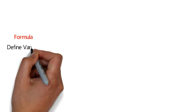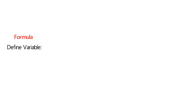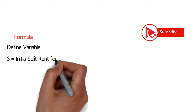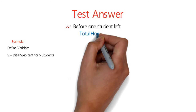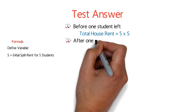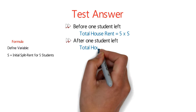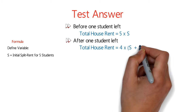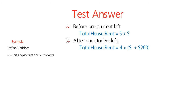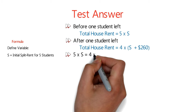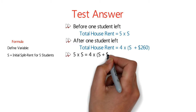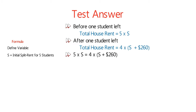Let's solve this together. Define variable S as the initial rent split for five students. The total rent is 5 × S. After one student left, the total rent can also be calculated as 4 × (S + $260). Setting these equal: 5S = 4(S + 260), which simplifies to 5S − 4S = $1,040.